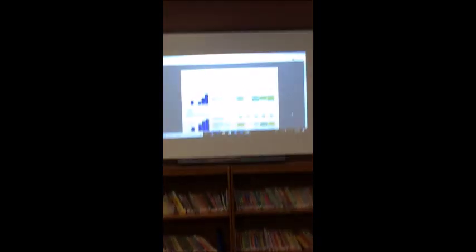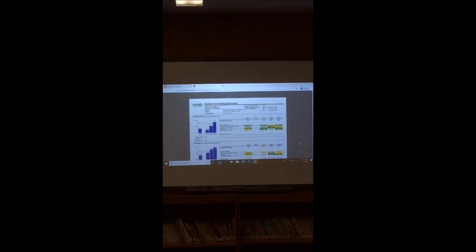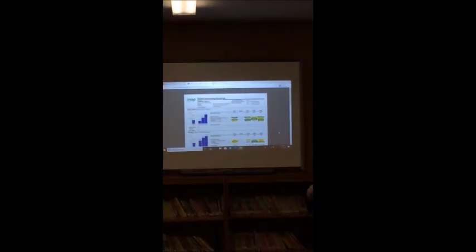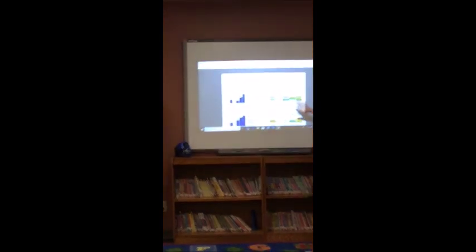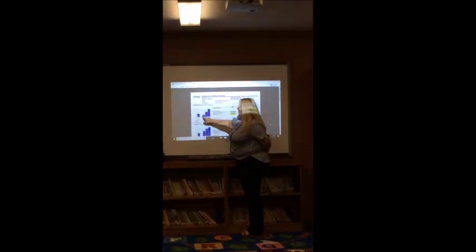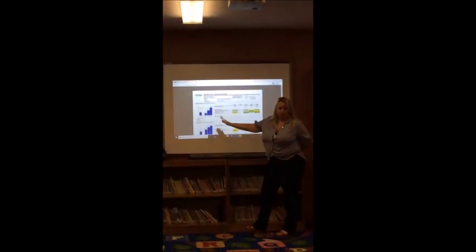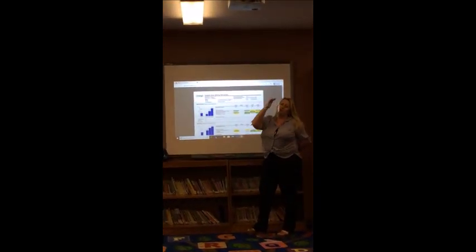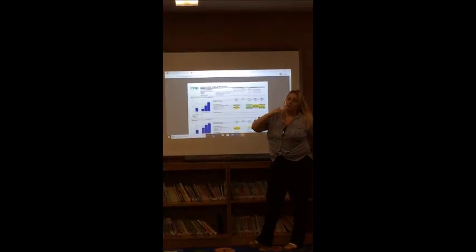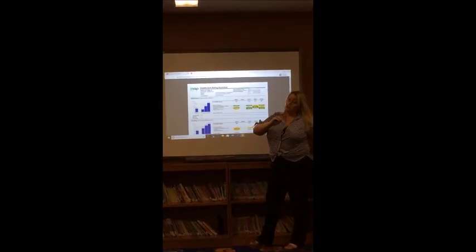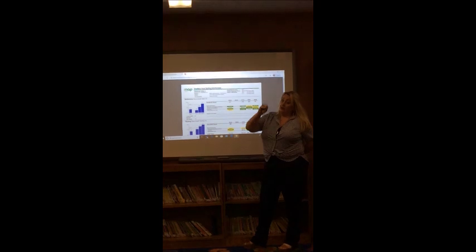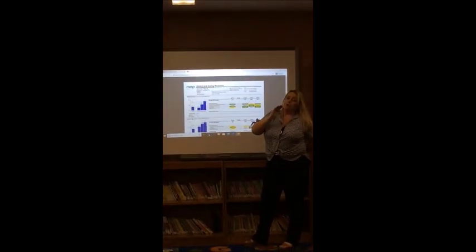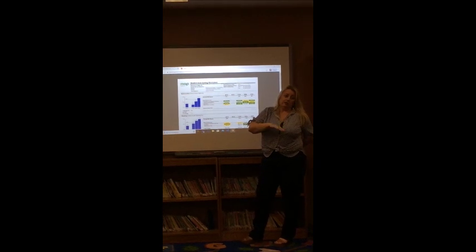All right, so this is our student goal setting worksheet and your teachers have prepared these for you tonight. And so when we look at this report, these blue bars show us how your student performed. The dotted line is the projected RIT score. So when they start out assessing and they get their first number, and then they go to the next number, the next assessment, they will compare like student to like student.